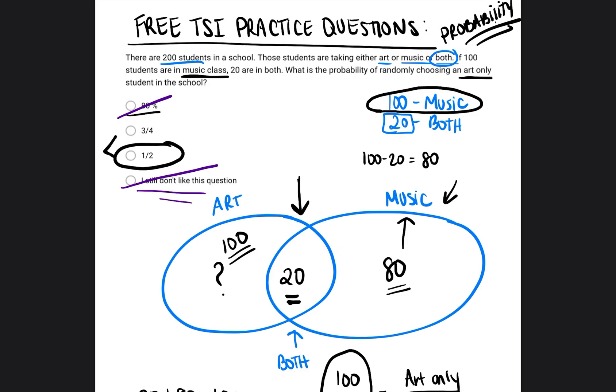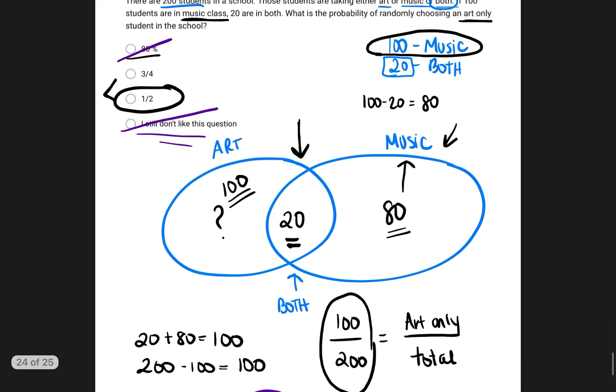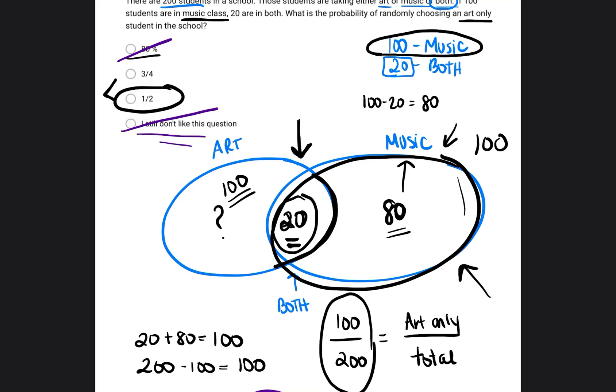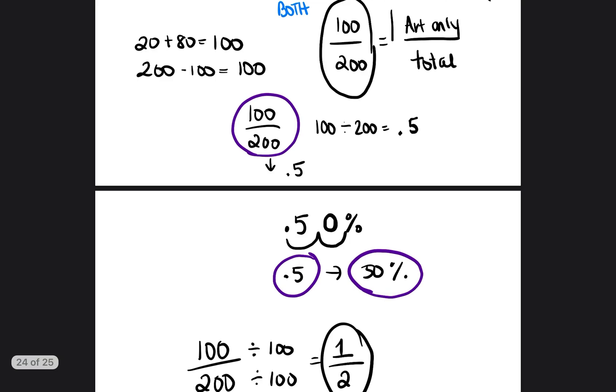When you draw a Venn diagram, it's very easily to label a Venn diagram with the different classes. And to see that the 20 students that are in both, that means if there's 100 total students that take music, and they're divided into two sections of the Venn diagram, and 20 are here, that means 80 are over here. So 100 total students are in a math class, 20 of them are in math and art, 80 of them are in music only. Okay. But now it's like, okay, we want to find how many are in art only. So we took that total 200, subtracted by the 100 students that are in music or both. And we have 100 students that are in art only. When we found out how many students are in art only, we put it into a fraction over the total. And then we were either told to reduce the fraction, or we had to turn the fraction into a decimal, or we had to turn the decimal into percentage. And so now you guys know how to do each one of those things.